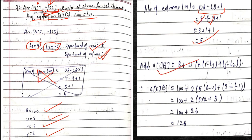Applying the formula: base address is 100, size of each element is 2, number of columns is 5, desired row is 6, lower bound of row is 4, desired column is 2, lower bound of column is -1. Solving this, we get the answer 126. This is how we find the row-major address of an element of a two-dimensional array.